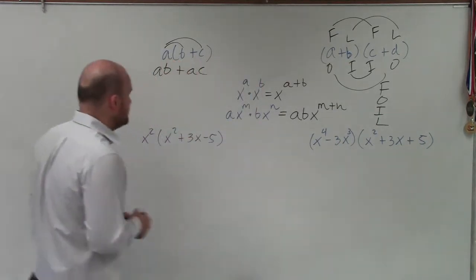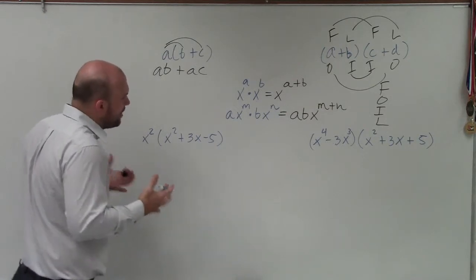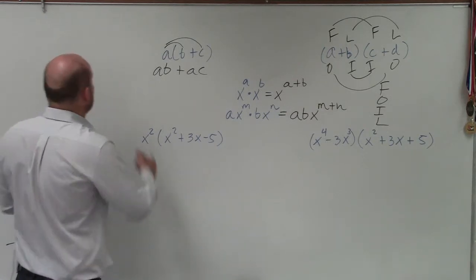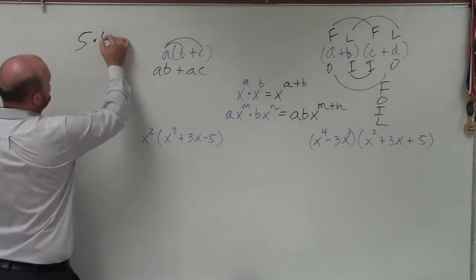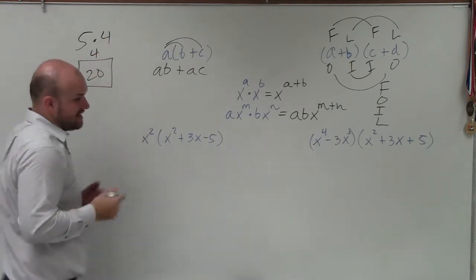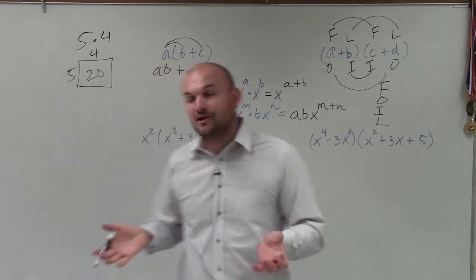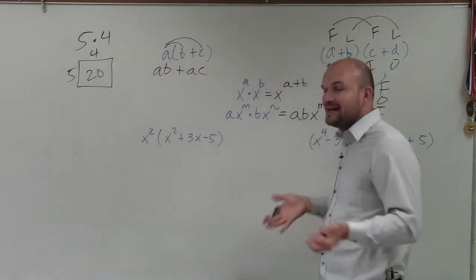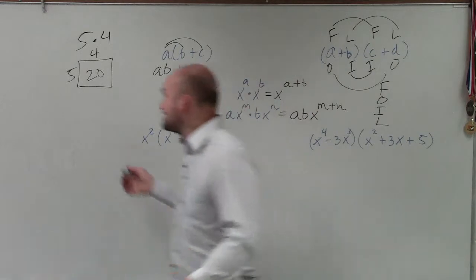So basically, to do box method, when you are multiplying the product, basically all you're doing, when I say like five times four, all that really means is the length of five and the four. Then you could say, well, my product, which is 20, really kind of represents the area of that box.